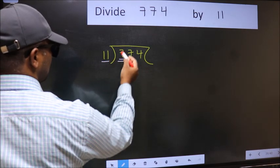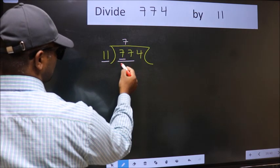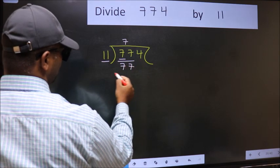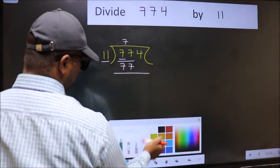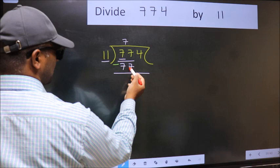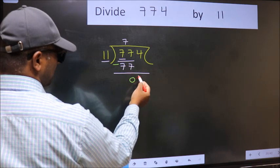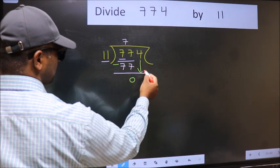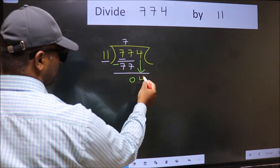When do we get 77 in 11 table? 11 sevens is 77. Now you should subtract. 77 minus 77 is 0. After this, bring down the beside number. So, 4 down.